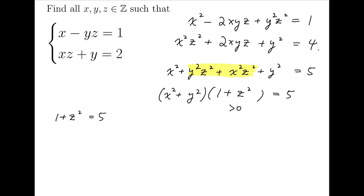1 plus z squared equals 5, or 1 plus z squared equals 1. For 1 plus z squared equals 5, we have z squared equals 4,